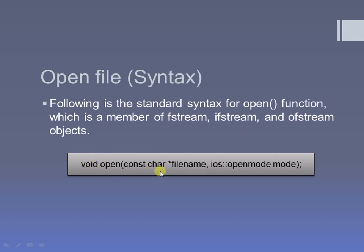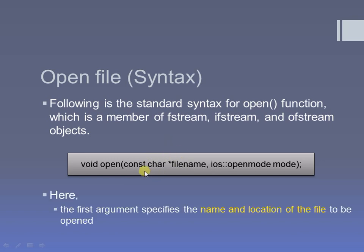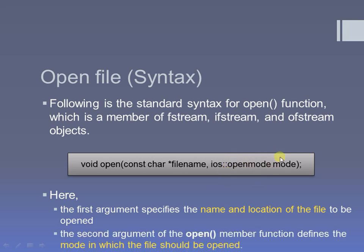The open function takes two parameters. The first one is the file name with the path or the location at which your file is stored, or where you are going to store it if you are creating a new file. The second parameter is the opening mode. You must know the opening modes before using this open function. I have already shared the link to the opening modes video. Here I am assuming that all of you know the different file opening modes.